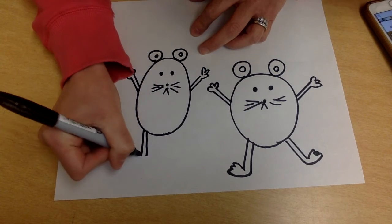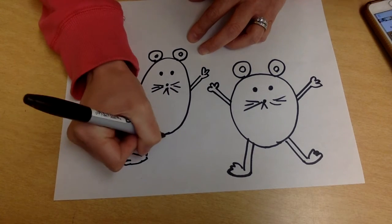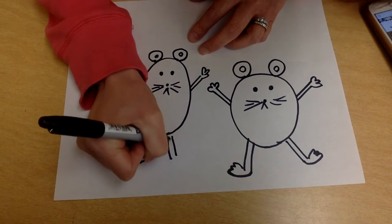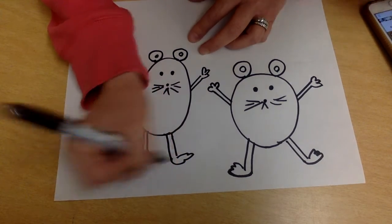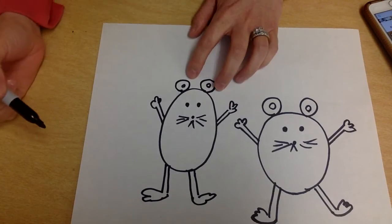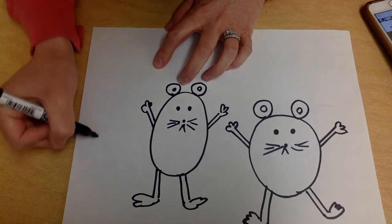And then the legs. Your mice don't have to be standing on the ground. They can look like they're jumping, so wherever you have space. All right, so let me do my other one over here.